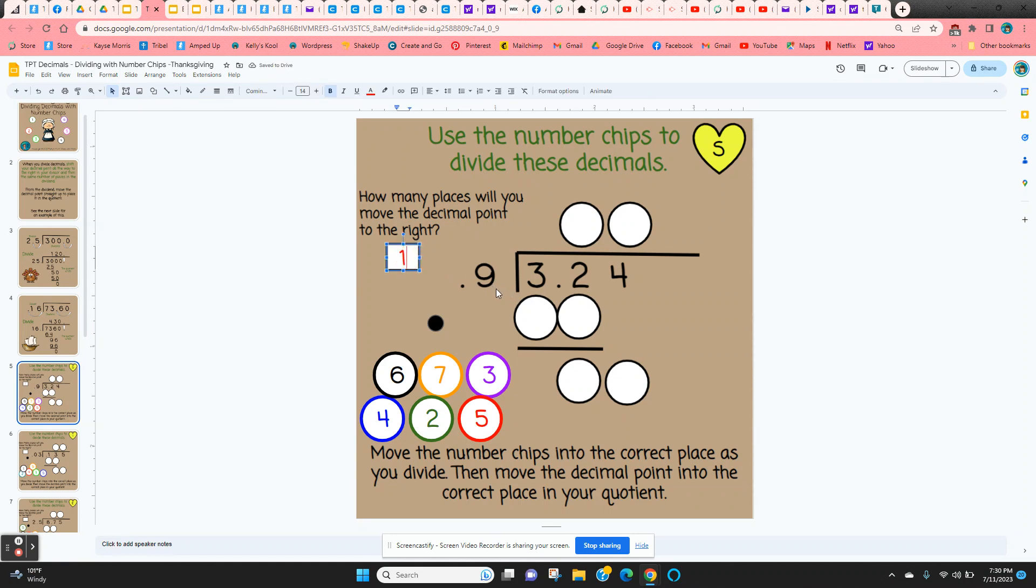Now they're going to do the division. Nine goes into 32 three times. So click and hold on the edge of the three. Three times nine is 27.